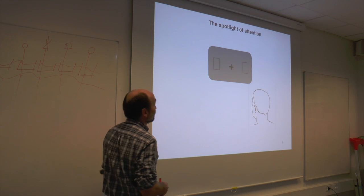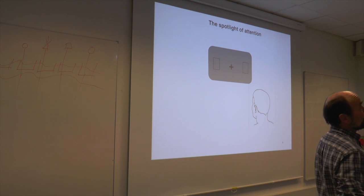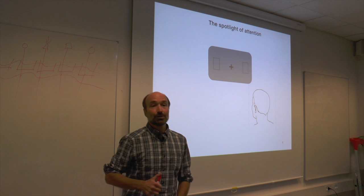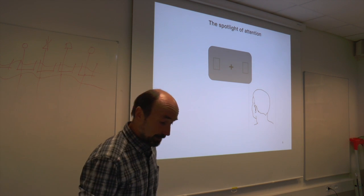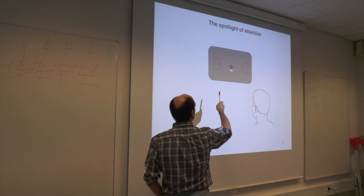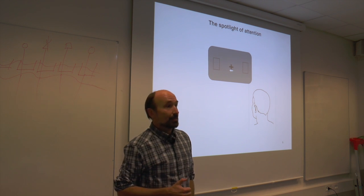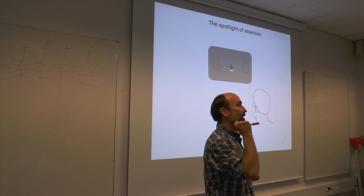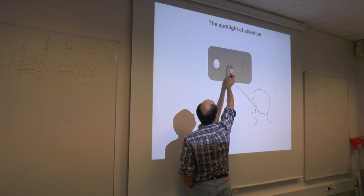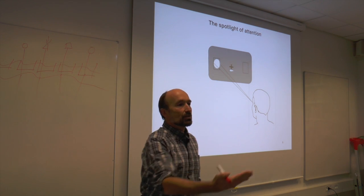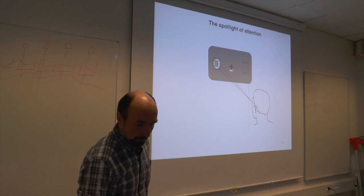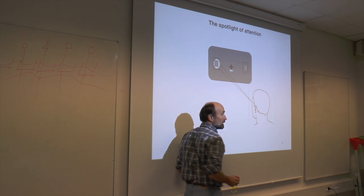Now, the attentional spotlight: the famous Posner design. An arrow cues a location with high likelihood of a target. You shift your spotlight of attention while maintaining fixation, so attention is already at the likely location. When something happens there, you press the button much faster compared to when it happens on the opposite uncued side.